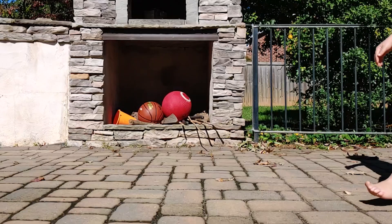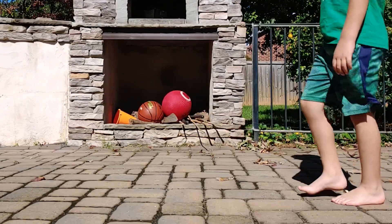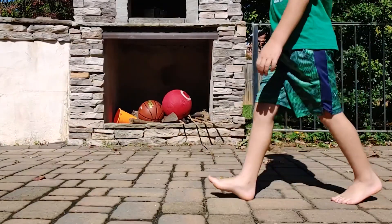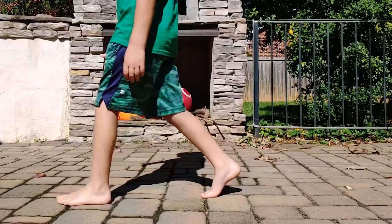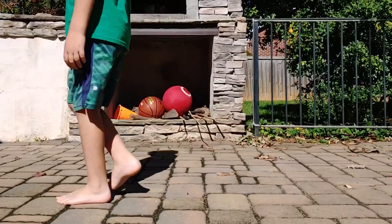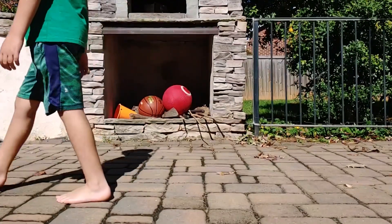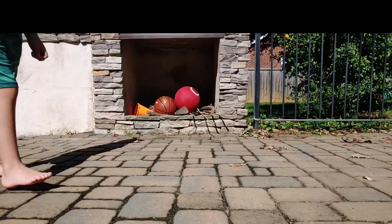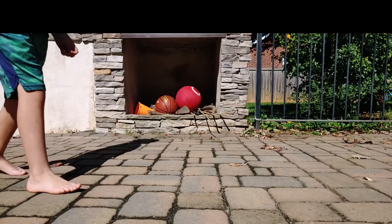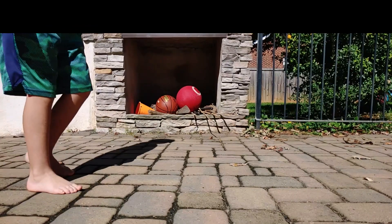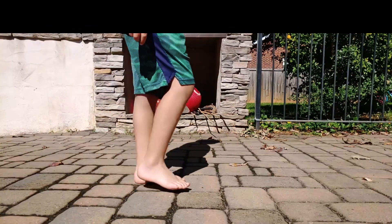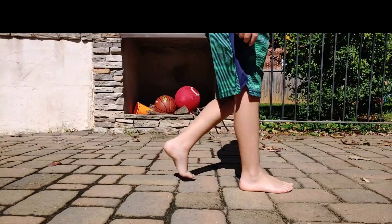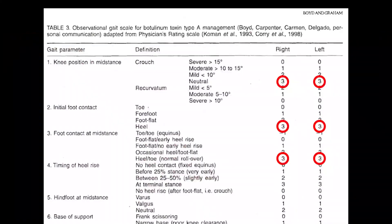The next one looks at the timing of the heel rise. On Sammy, his heel doesn't come up too soon when he's walking. When his foot is down, his heel comes up right at the end of stance — it pops up, which is normal. So he gets three points on each leg.